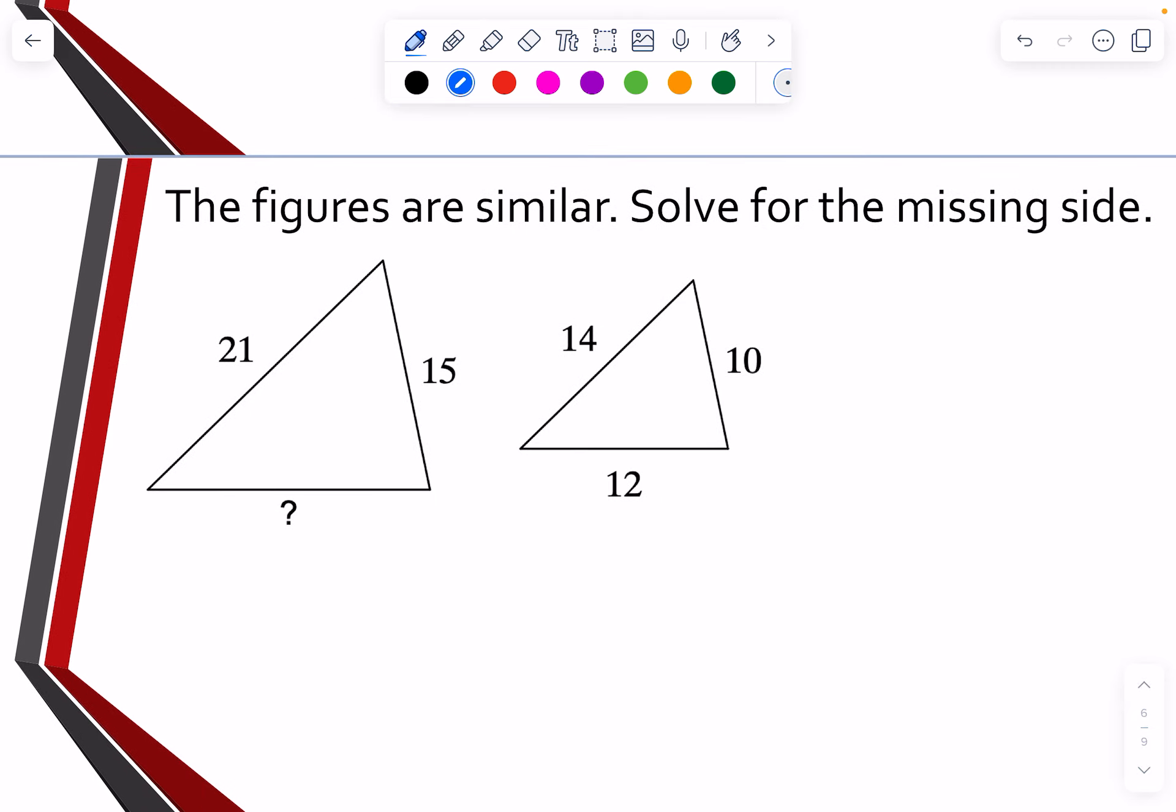So now what we can use is that concept of scale factor to be able to solve for the missing sides. So if we start off, I know that 15 is matching up. They're corresponding to 10. So 15 is to 10 as, well, notice I started with the 15. X is to 12. So what that tells me is when I look at this, I have 15 to 10. And in order for these to be similar, which I'm told the figures are similar, then I also know X has to go to 12.